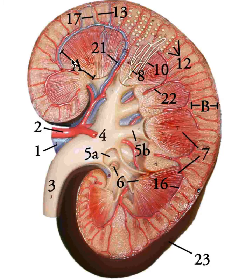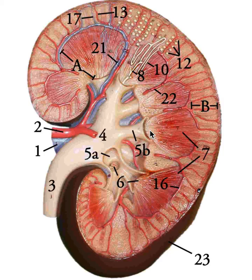Within the medulla, you have pyramid-shaped structures called the renal pyramids. At the very tip of each renal pyramid is what's called a papilla — the renal papilla. Papilla literally means nipple, so it takes on a nipple-like structure in three dimensions. In your dissection you'll see this in 3D and understand how it gets its name. Always refer to it as the renal papilla since we see papillae throughout the body.